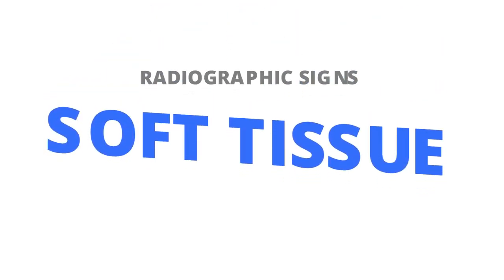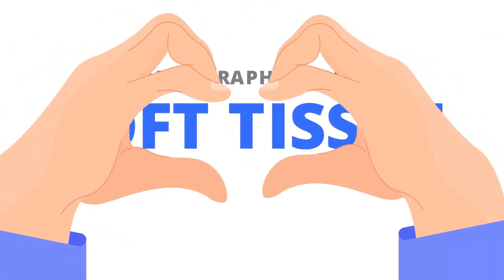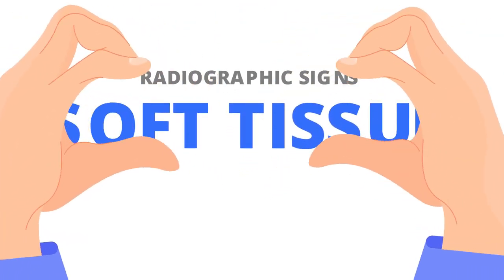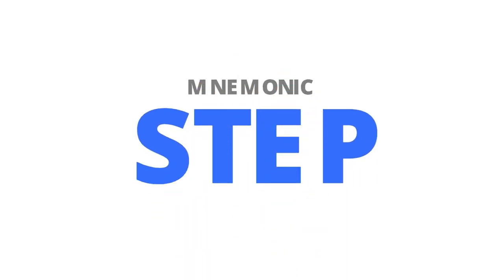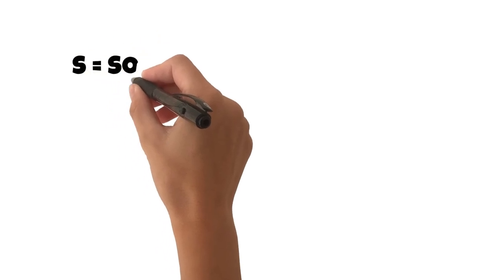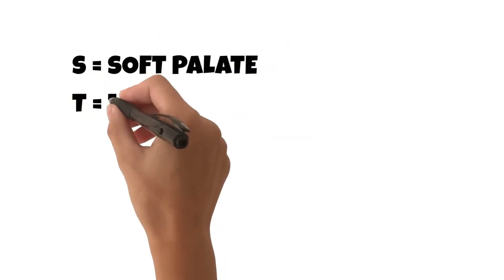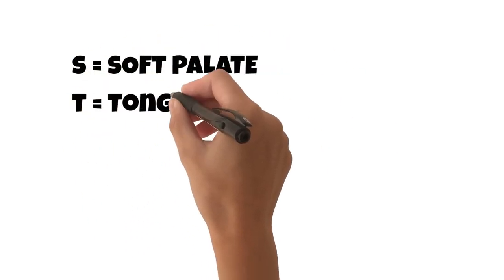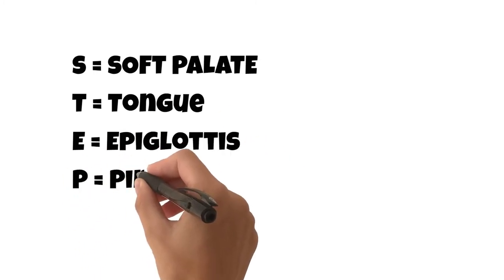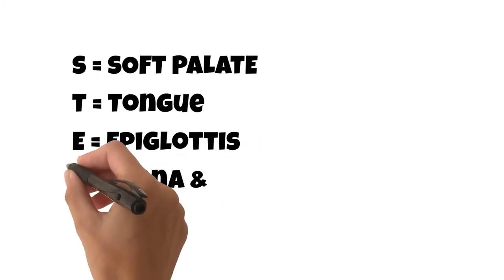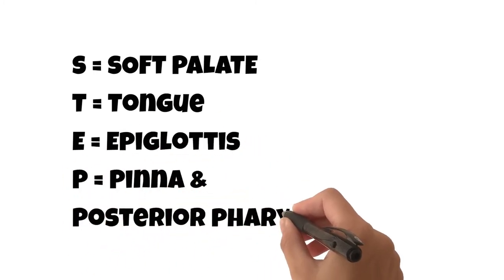For the soft tissue shadows that appear on an OPG, remember the acronym STEP: S is for soft palate, T equals tongue, E equals epiglottis, P equals pinna, and the posterior pharyngeal wall.